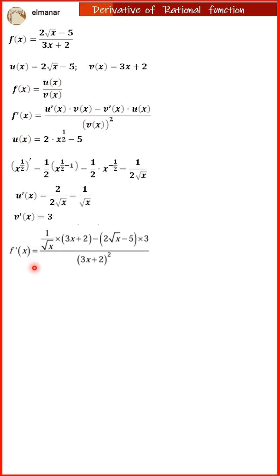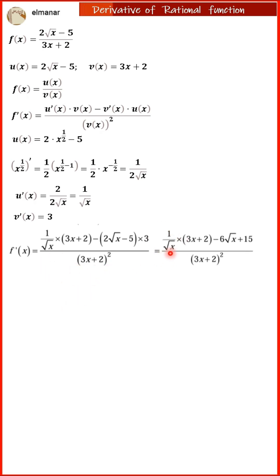Applying the quotient rule, the derivative of f is equal to 1 divided by the square root of x, multiplied by 3 times x plus 2, minus 2 times the square root of x minus 5, multiplied by 3, all divided by 3 times x plus 2, squared. Expanding the expression, the derivative of f equals 1 over the square root of x, multiplied by 3 times x plus 2, minus 6 times the square root of x plus 15, all divided by 3 times x plus 2, squared.